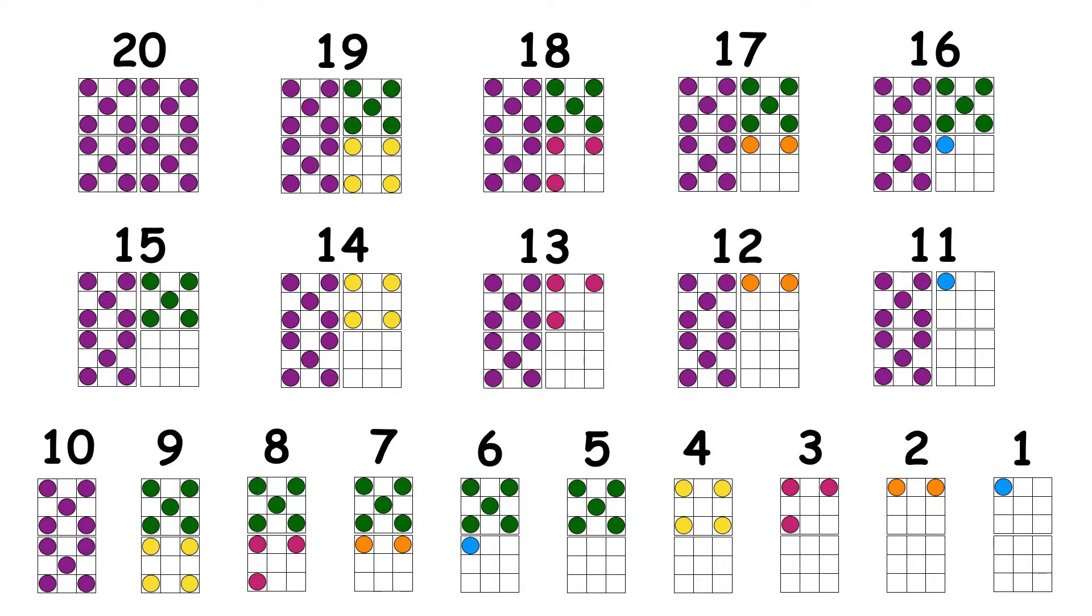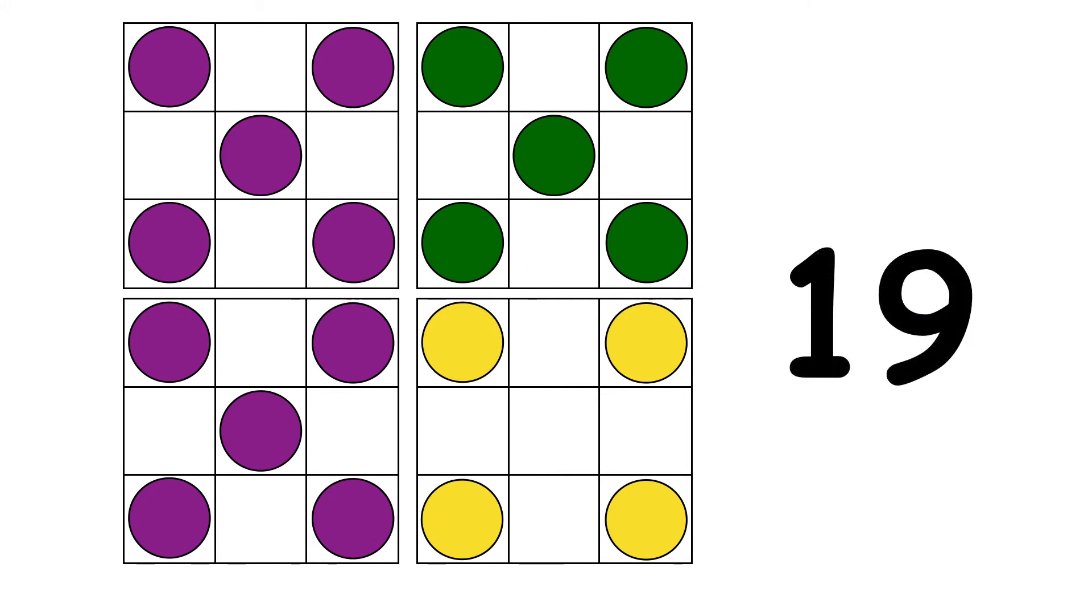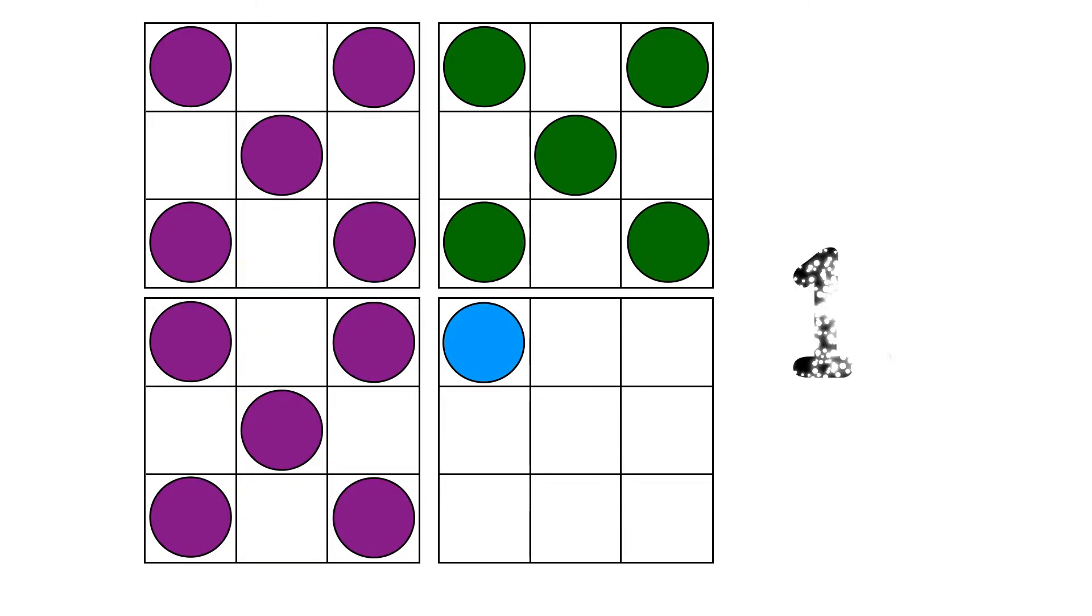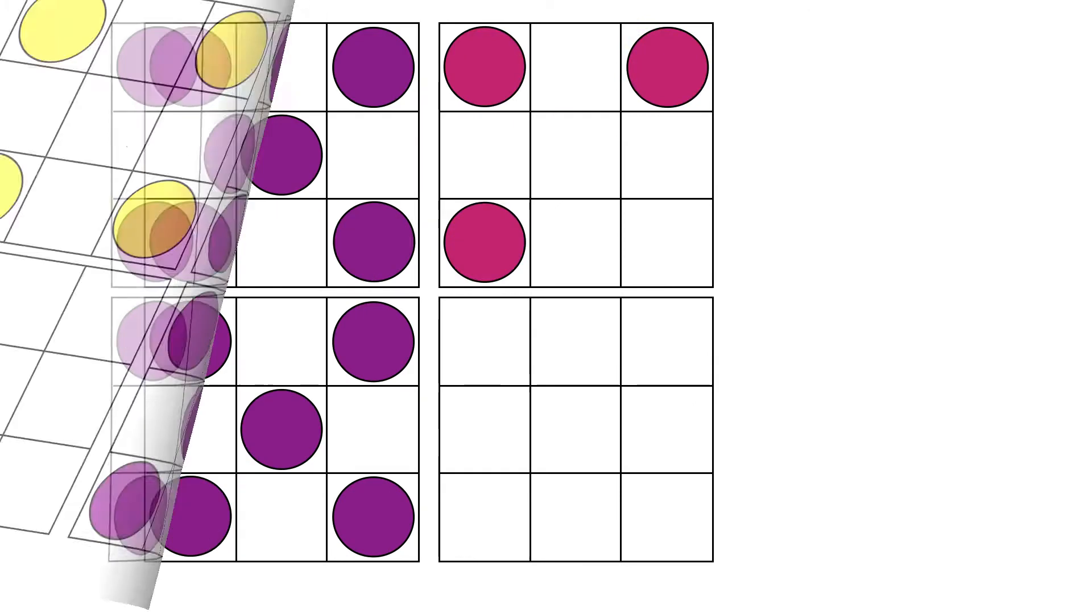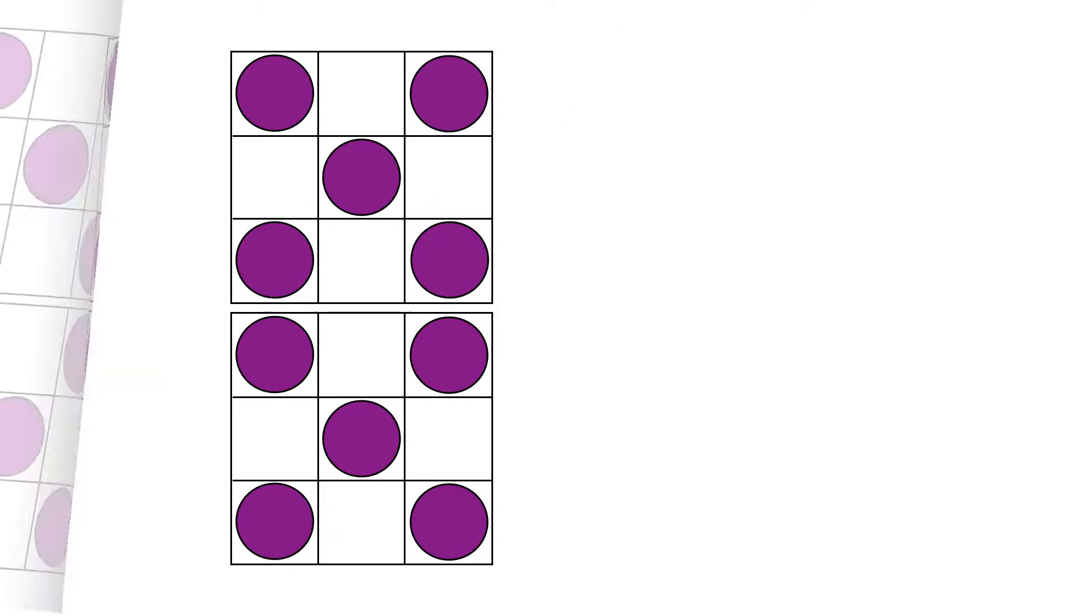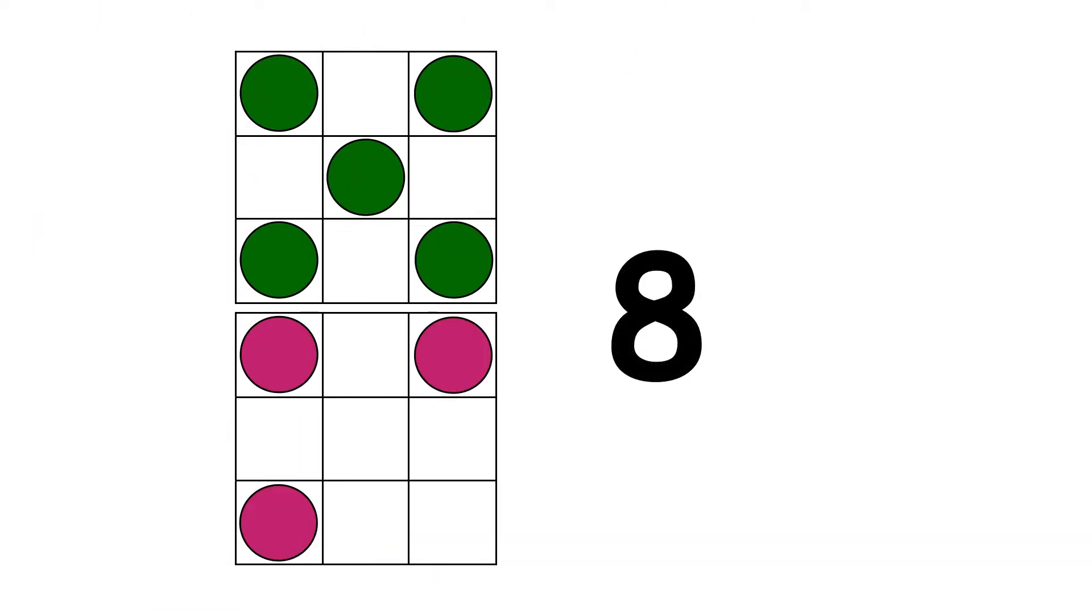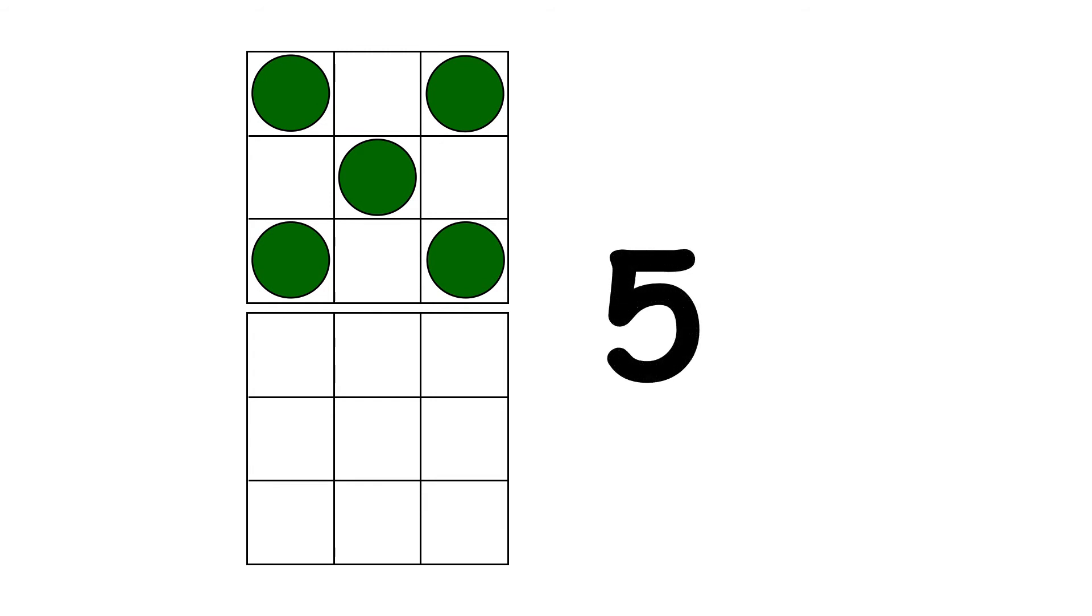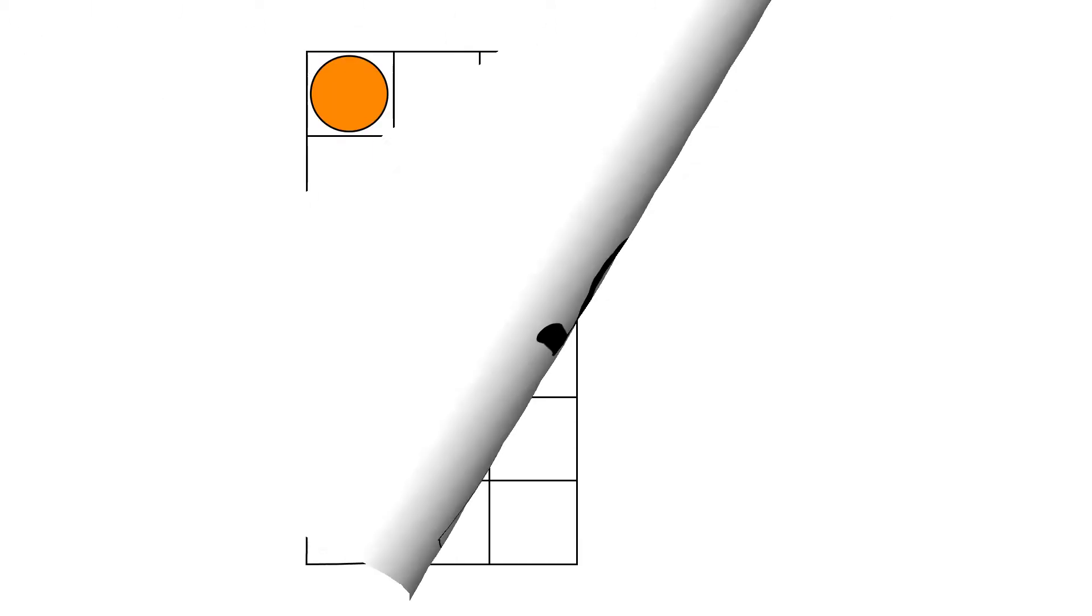Now let's count back one number at a time. 20, 19, 18, 17, 16, 15, 14, 13, 12, 11, 10, 9, 8, 7, 6, 5, 4, 3, 2, 1.